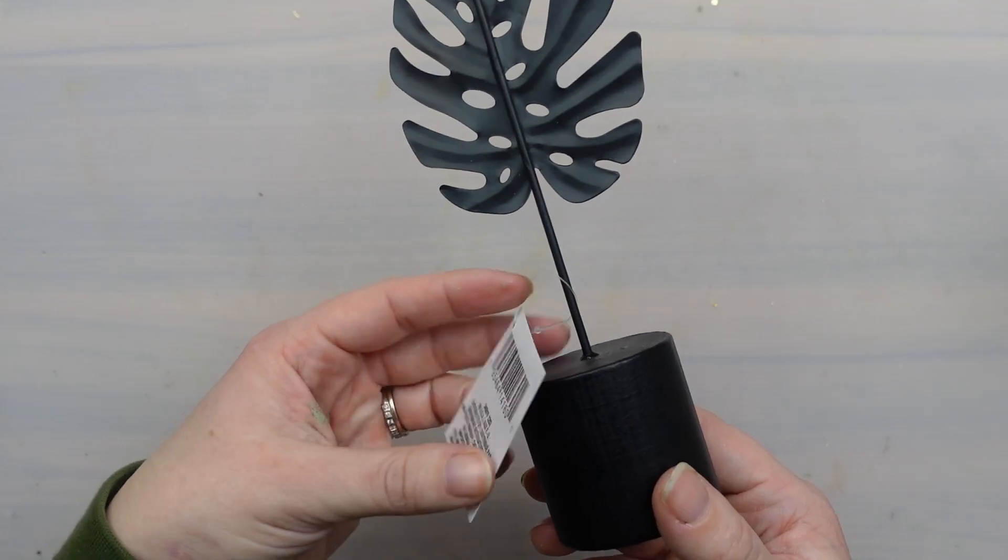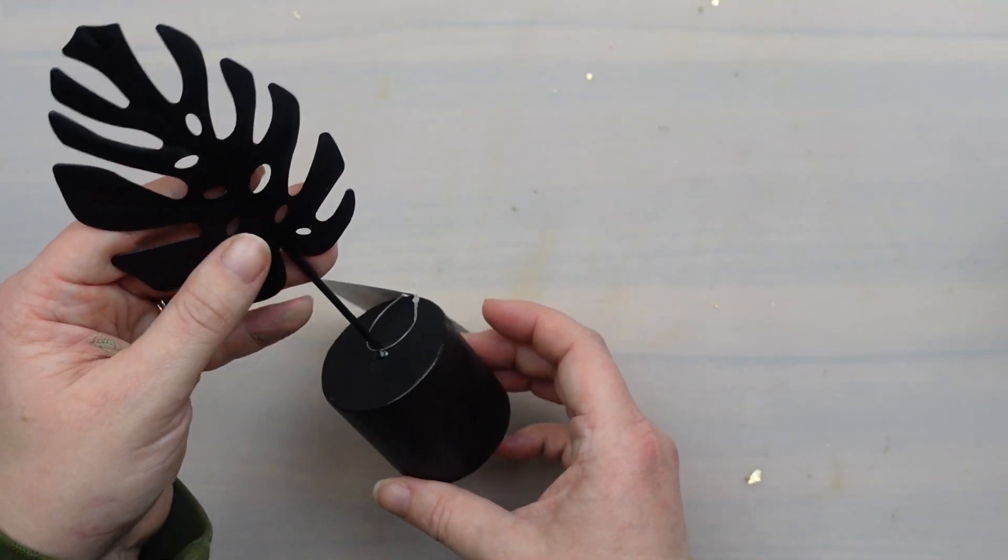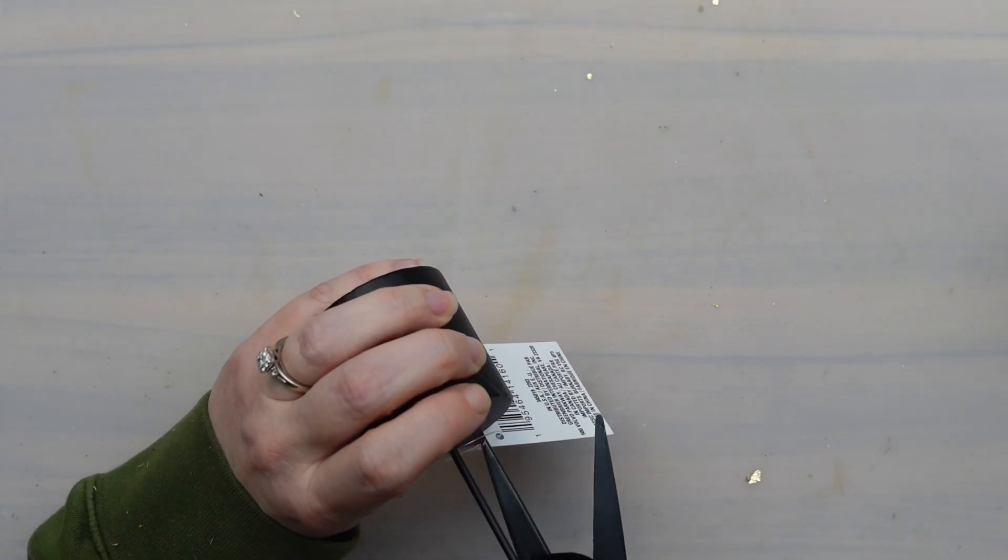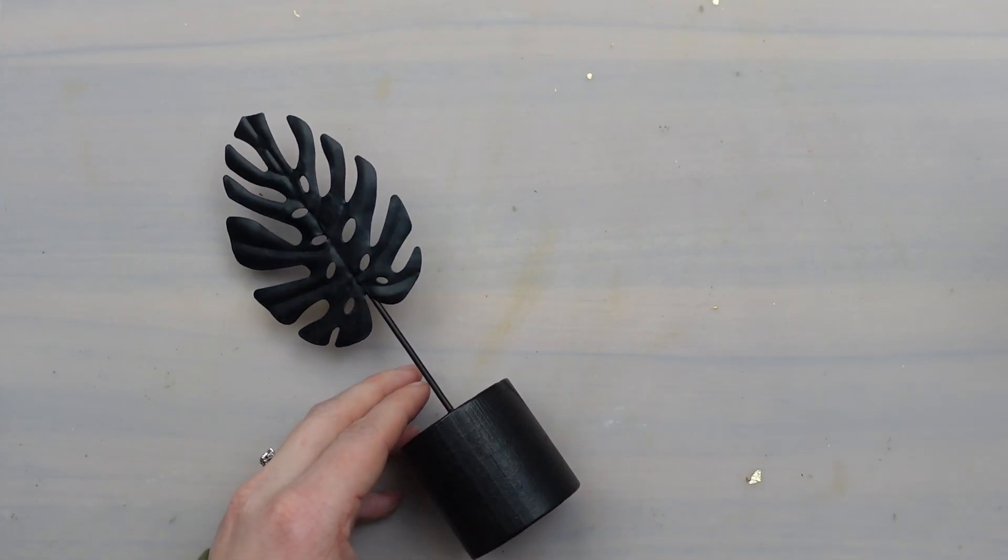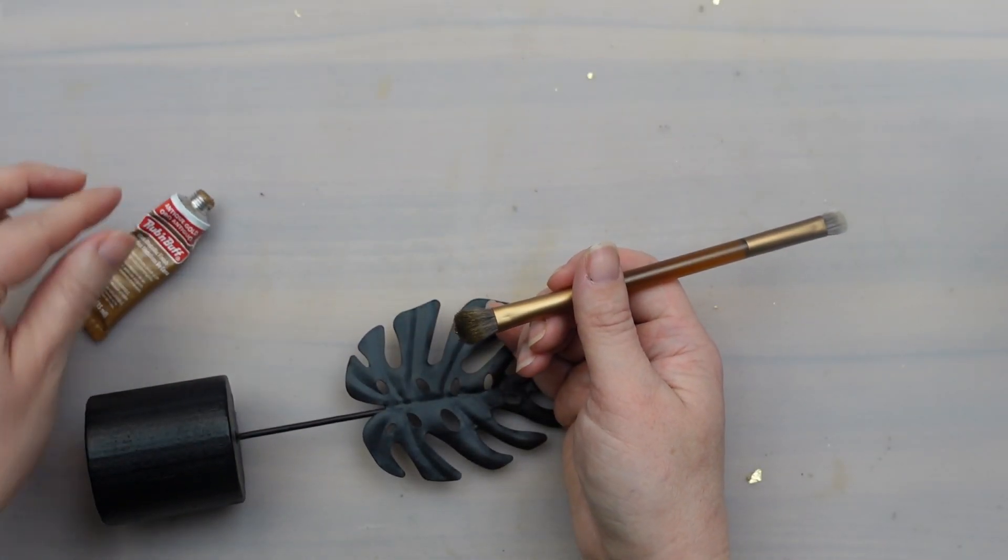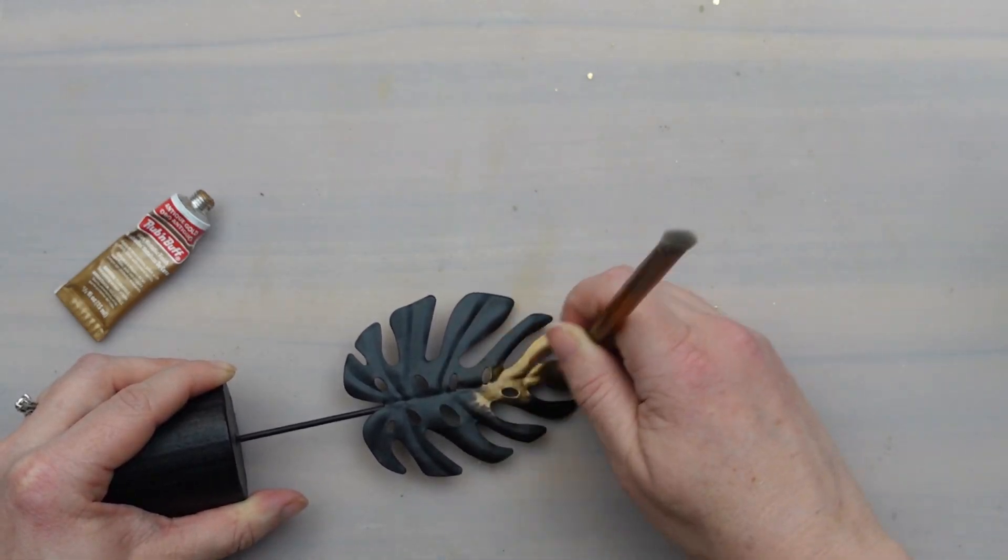This is another super easy and quick project. I know it's not a mushroom, but I've been wanting to do something with these Monstera pieces I've had from the Dollar Tree for a while now. I like the look of this as a solid black shelf sitter. It's definitely modern looking just how it is, but I'm taking my Rub and Buff to cover the top portion of it. I'm showing two colors here, but I only end up using the Antique Gold.